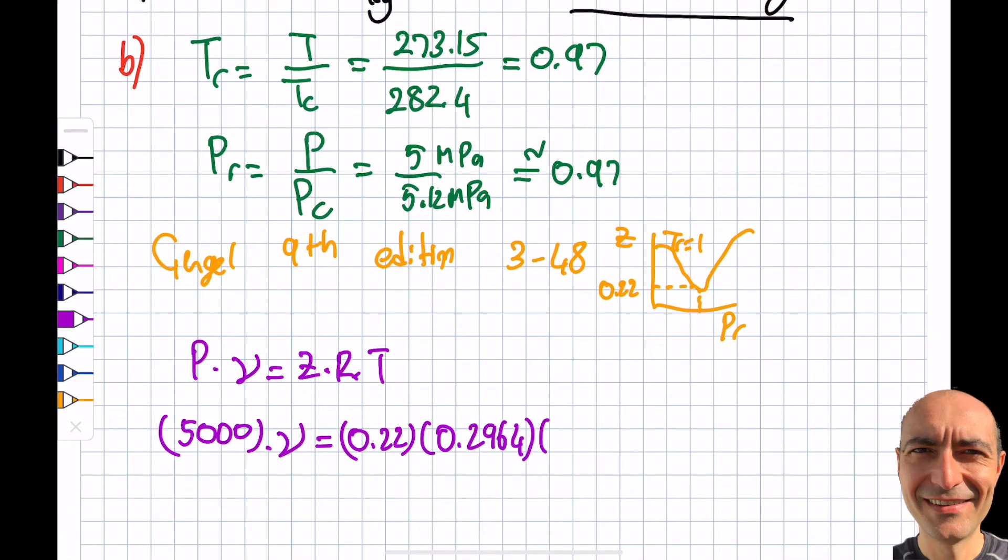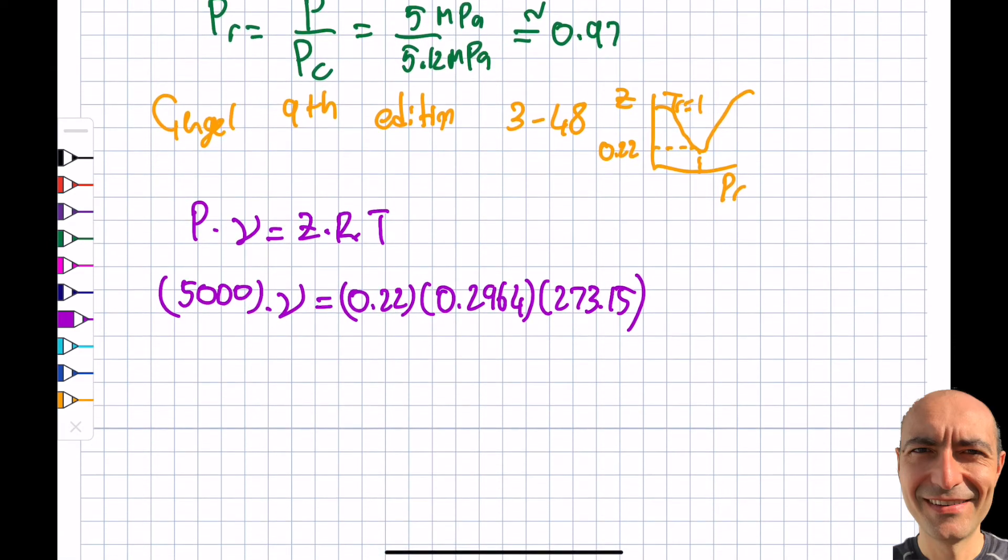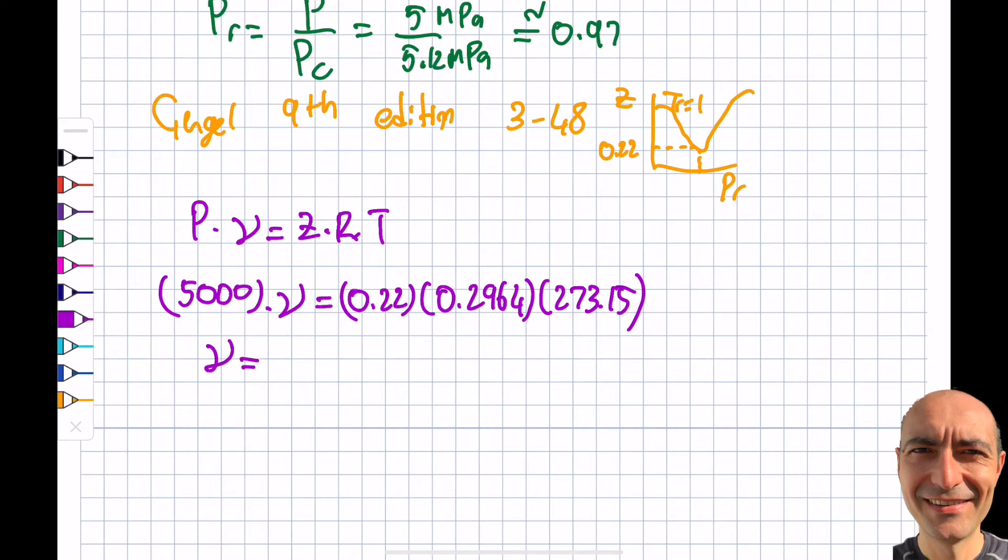The specific volume this time around turns out to be 0.00356, which equals 0.1 meter cube per mass. That's what I'm after, after all. From here I get my mass to be 28.1 kilograms. This is the real answer.